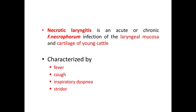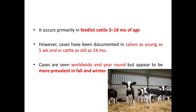Necrotic laryngitis is an acute or chronic Fusobacterium necrophorum infection of the laryngeal mucosa and cartilage of young cattle. This disease is characterized by fever, cough, and inspiratory dyspnea or stridor — stridor meaning a noisy or high-pitched sound with breathing, occurring due to blockage or narrowing of the upper airways. It occurs primarily in feedlot cattle 3 to 18 months of age, though cases can occur in calves as young as 5 weeks and as old as 24 months.